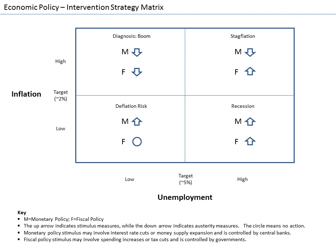Ludwig von Mises's work Theory of Money and Credit, published in 1912, was one of the first books from the Austrian school to deal with macroeconomic topics.